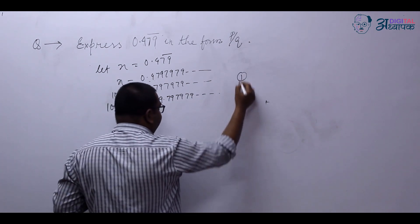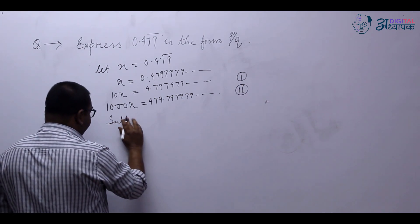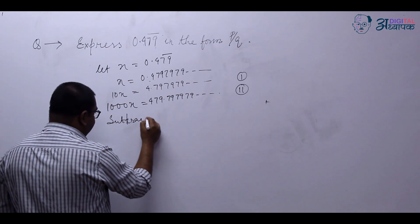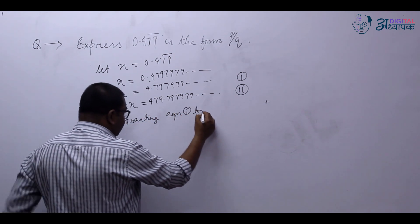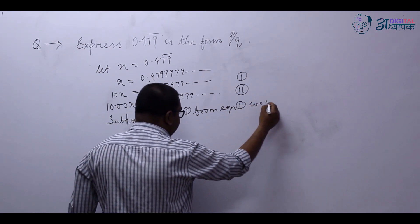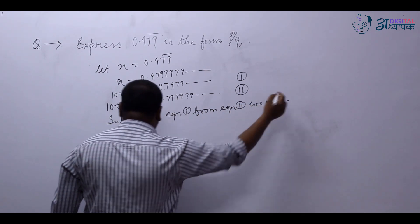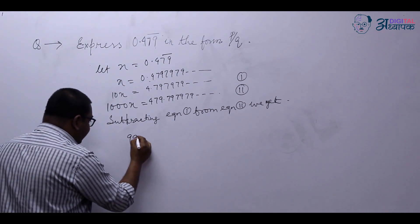Now let it be equation 1, let it be equation 2. Subtracting equation 1 from equation 2, we get. What do we get? We get 1000x minus 10x is 990x.